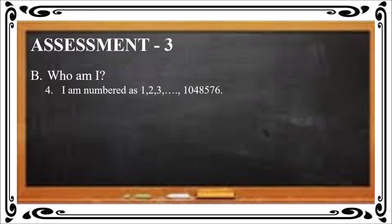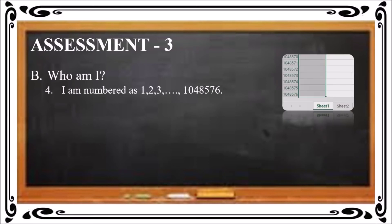Fourth Who am I — I am a number from 1, 2, 3 up to 10,48,576. These numbers are assigned to rows in an Excel worksheet. The correct answer is Rows. Columns, by contrast, are assigned alphabetic characters.